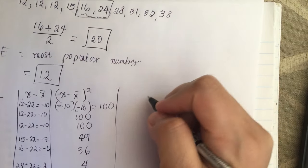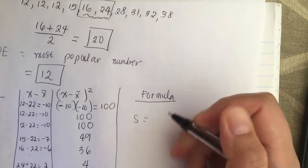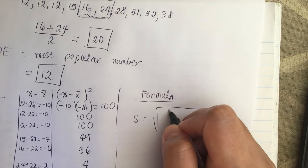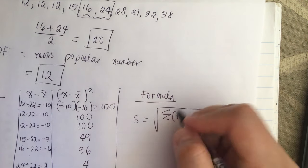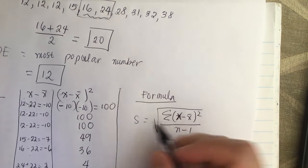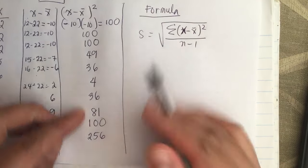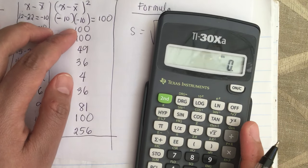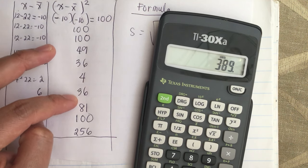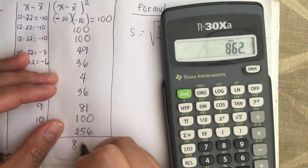The formula for sample standard deviation is s = √(Σ(x − x̄)² / (n − 1)). We need to sum the (x − x̄)² column: 100 + 100 + 100 + 49 + 36 + 4 + 36 + 81 + 100 + 256 = 862.